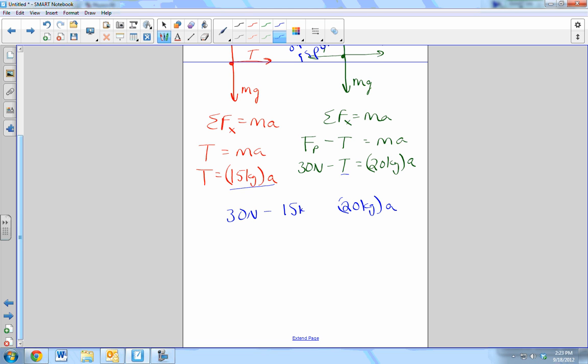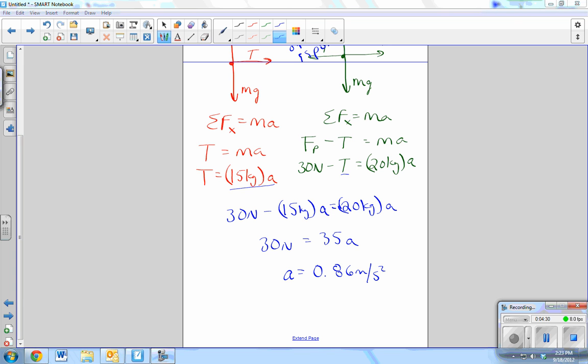This is actually kilograms over here. Remember when we saw that before? 30 equals 35a. And what's that? 30 over 35? Whatever that is, 0.86. 30 divided by 35.